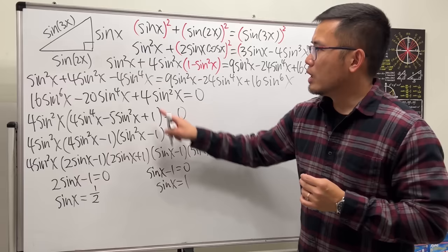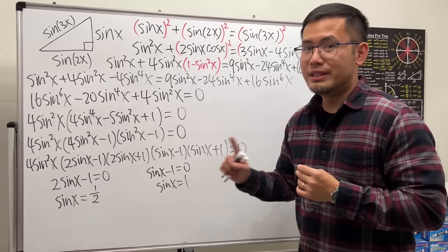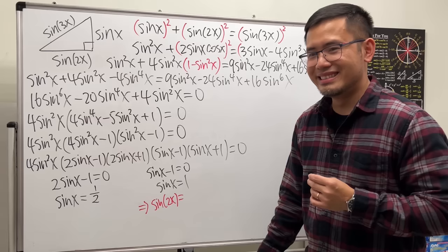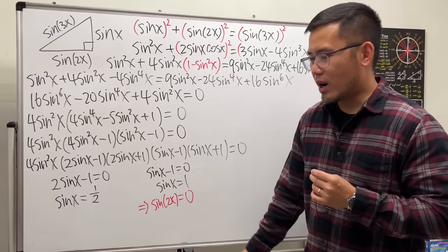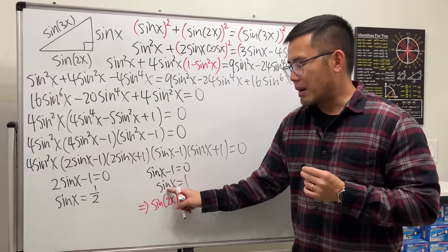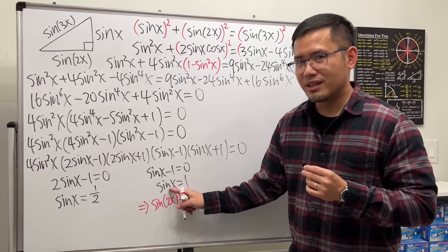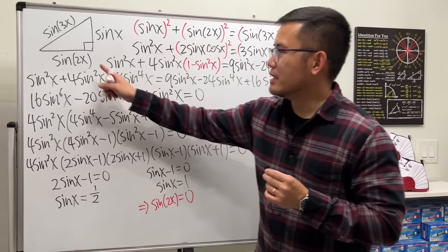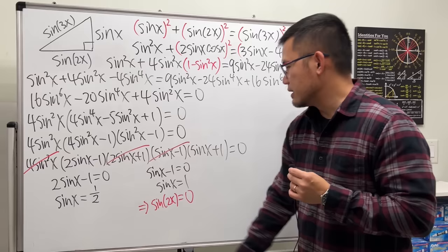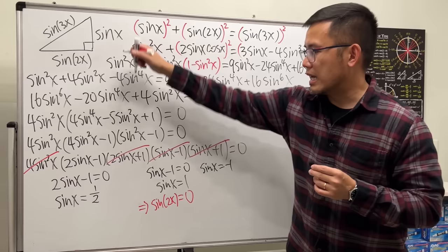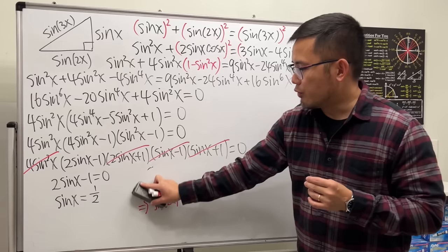If sine x minus 1 equals 0, then sine x equals 1 — that looks legit at first. But if sine x equals 1, then x equals pi over 2, and sine of 2x equals sine of pi, which is 0. That violates one of the triangle sides. And sine x plus 1 equals 0 gives sine x equals negative 1, which also violates the positive side condition. So the only valid factor is the one giving sine x equals one half.